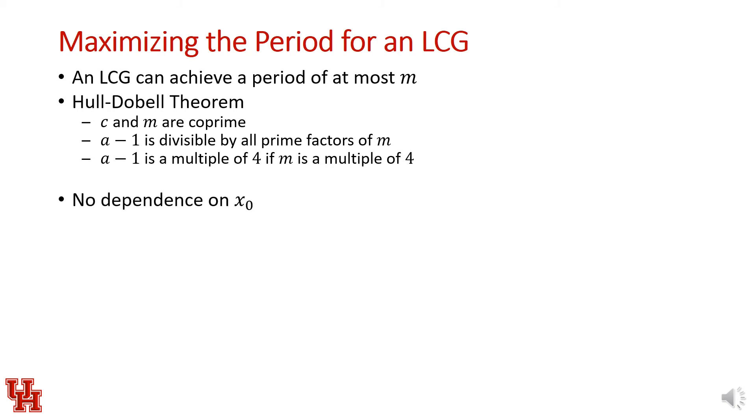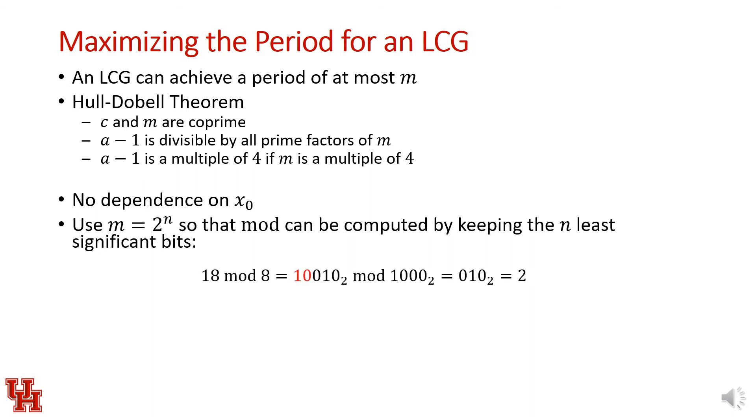In this case, the Hull-Dobell theorem gives us no dependence on x_0, so we can select any seed that we want. But if we want to get the maximum period, we'd like to use a modulo of 2^n, where n is the number of bits that we have available in whatever register we're using to store the random unsigned integer. Remember from our previous lectures that we can perform this modulo operation by keeping the n least significant bits, essentially by forcing an overflow.